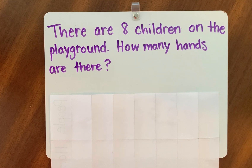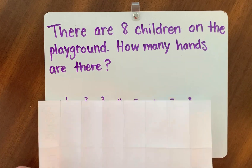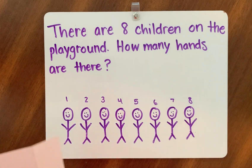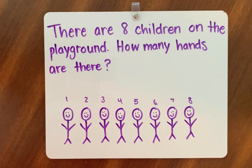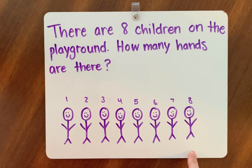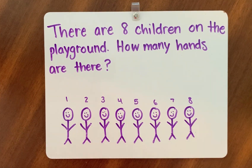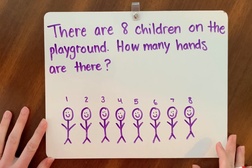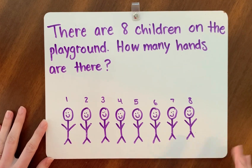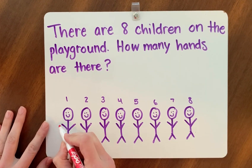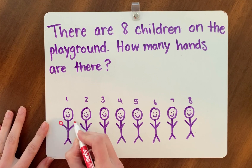To figure that out, I thought I would draw a picture of eight children. We have eight children on the playground and we have to figure out how many hands there are. So I'm going to go ahead and draw a hand on each child. I'll just draw a circle for their hands so that it takes less time, and each red circle is going to represent one hand.